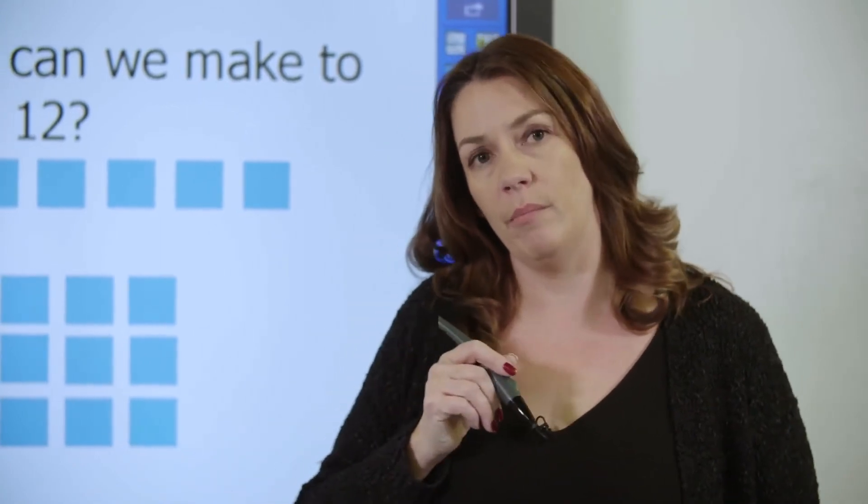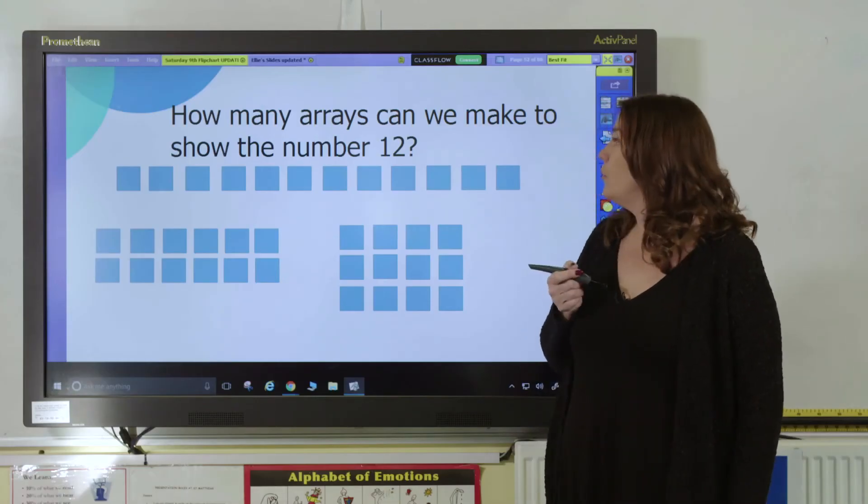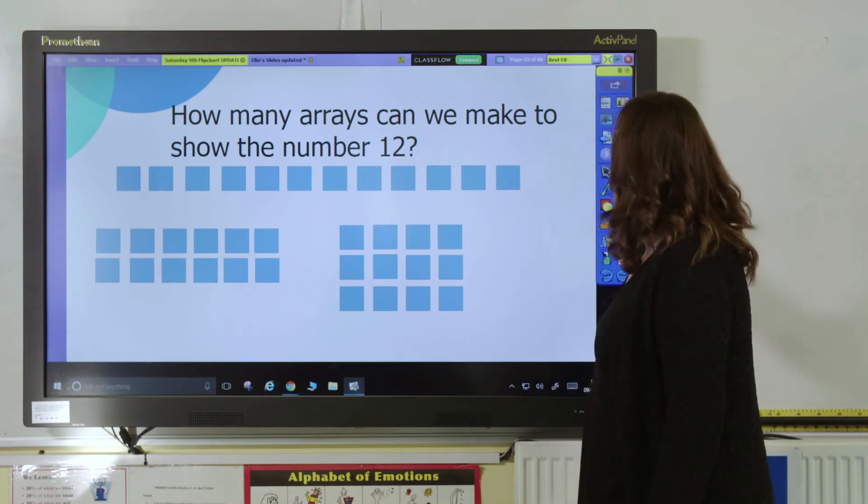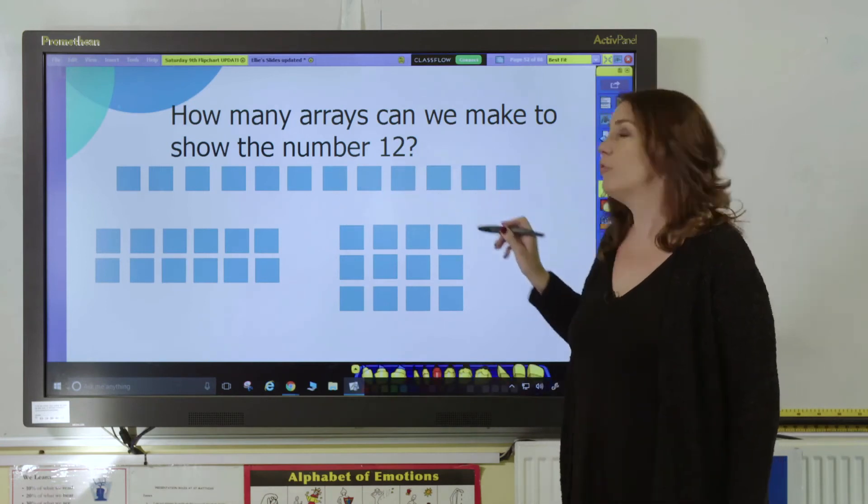We can also use arrays to investigate composite and prime numbers. For example, how many arrays can we make to show the number 12? Well, here we have one group of 12.